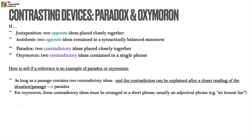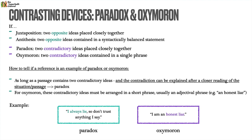If it's a paradox, I might say 'I always lie, so don't trust anything I say.' That's paradoxical, because if you always lie, then this statement alone would also be a lie, which means you're not lying. But for an oxymoron, I'm saying 'I'm an honest liar' — honest is an adjective, liar is a noun. When placed together they're contradictory, because if you're a liar, then by definition you must be dishonest.